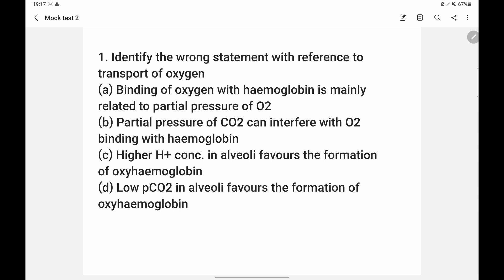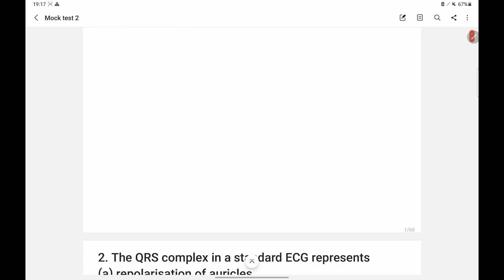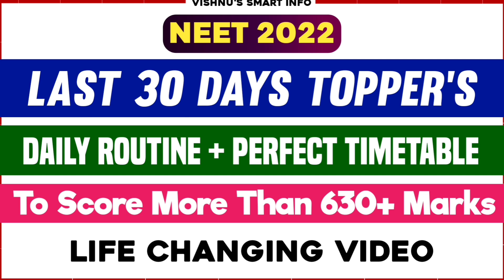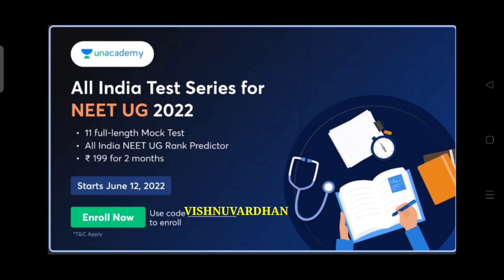So the wrong answer should be option C. Students, for the NEET 2022 exam, approximately 30 days remain. I have already prepared these 30-day topper-level resources. If you don't connect to them and study in the last 30 days, you will lose a minimum of 20 marks.